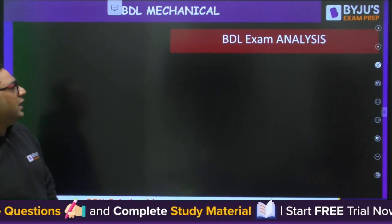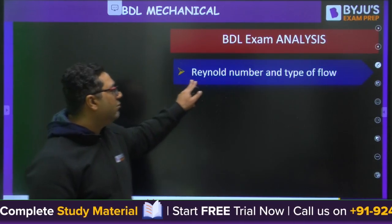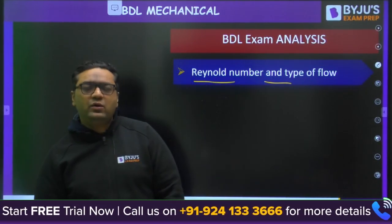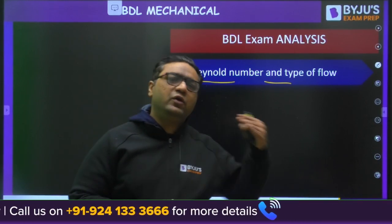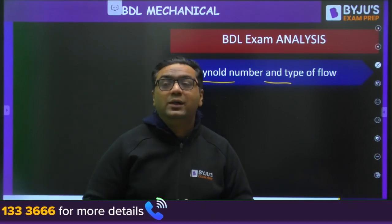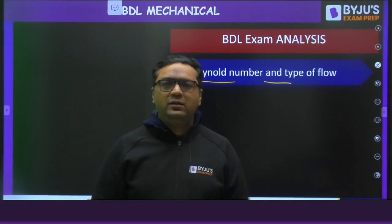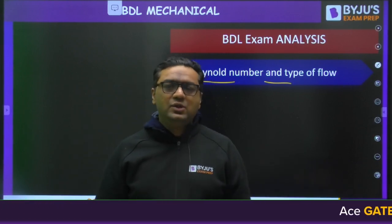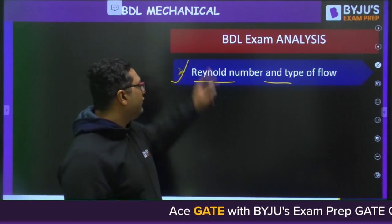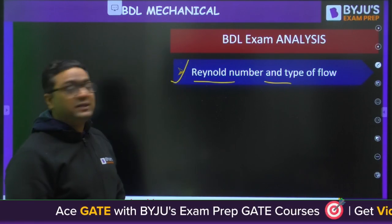Next, we move to Reynolds number and type of flow. By looking at the value of Reynolds number, we determine whether the flow will be laminar, turbulent, or transient. A question of this type was asked from Reynolds number where they asked about the type of flow.